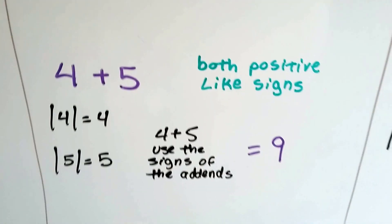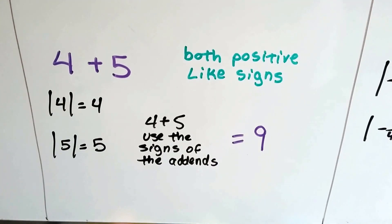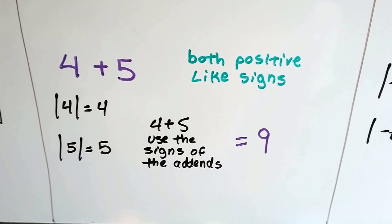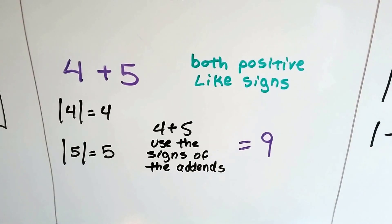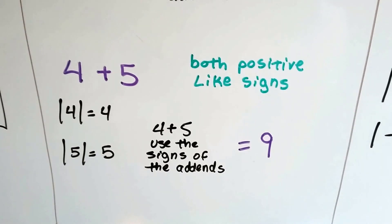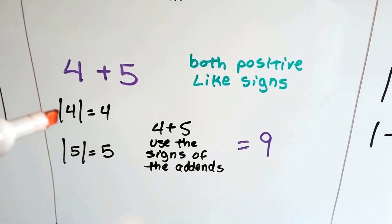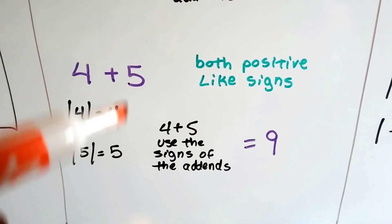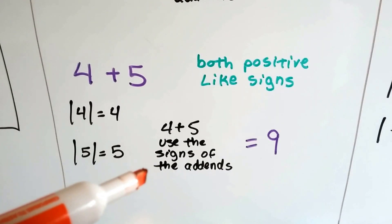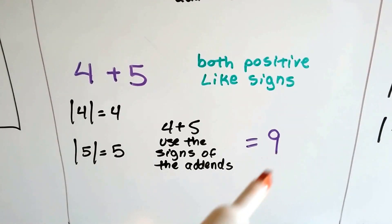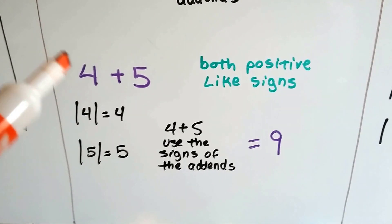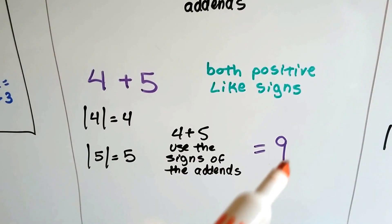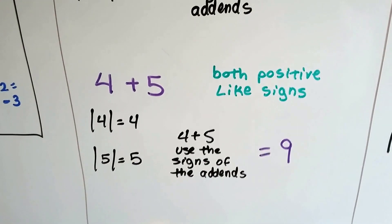This one is really easy. We have positive 4 and positive 5 — they're both positive. The absolute value of 4 is 4, and the absolute value of 5 is 5. 4 plus 5 is 9, and we use the sign that both addends had. They were both positive, so the answer is positive 9.